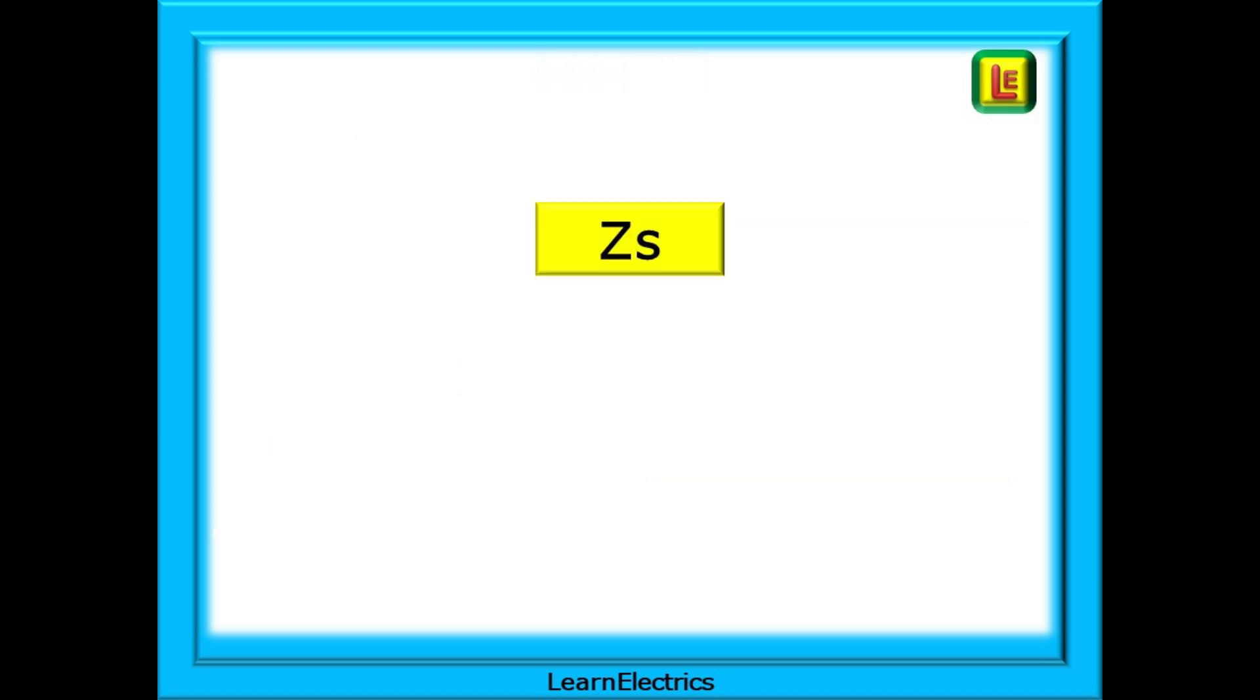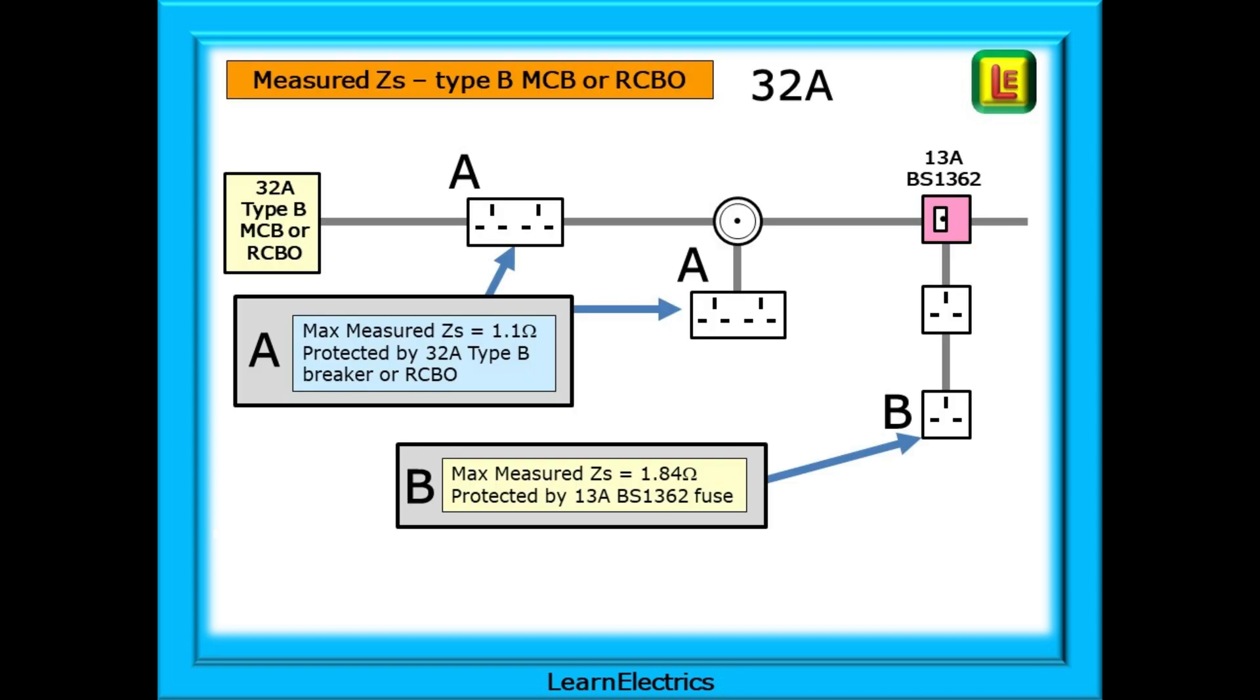The next question is about ZS. Does this change if we add spurs to a circuit? Let's take a look. At point A on this drawing, the socket outlet on the ring and the socket outlet spurred off the ring are both protected by the 32 amp breaker at the consumer unit. If this was a type B breaker or RCBO, we would have a maximum ZS of 1.1 ohms for both of these outlets at point A.